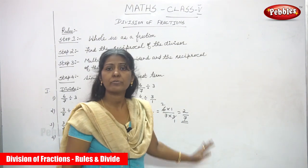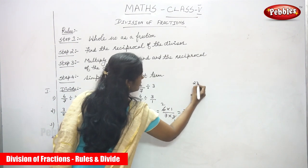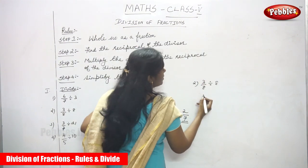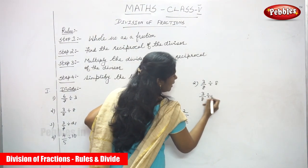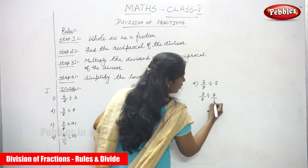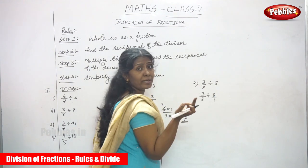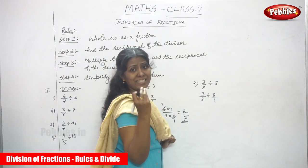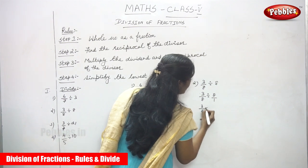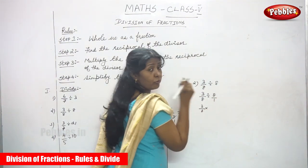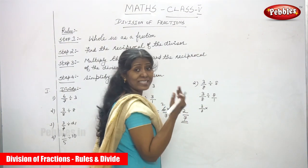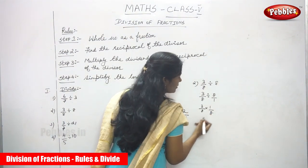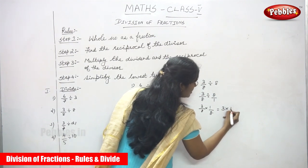Second sum: 3/8 divided by 8. Here 3/8 is a fraction and 8 is a whole number. Step 1: convert 8 to a fraction — 8/1, since there is no denominator, we assume 1 as the denominator. So the dividend is 3/8 and the divisor is 8/1. Step 2: find the reciprocal of the divisor — 8/1 becomes 1/8.